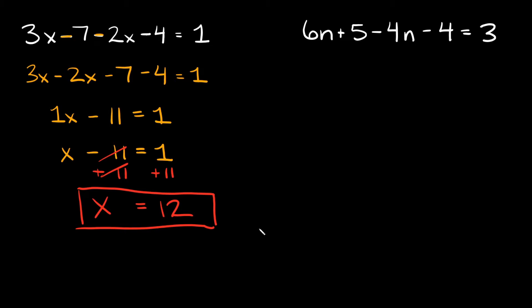Hopefully that wasn't too bad let's just do one more example here. Up here we have 6n plus 5 minus 4n minus 4 is equal to 3. Again the first step is going to be shuffling stuff around to make it easier to combine like terms.